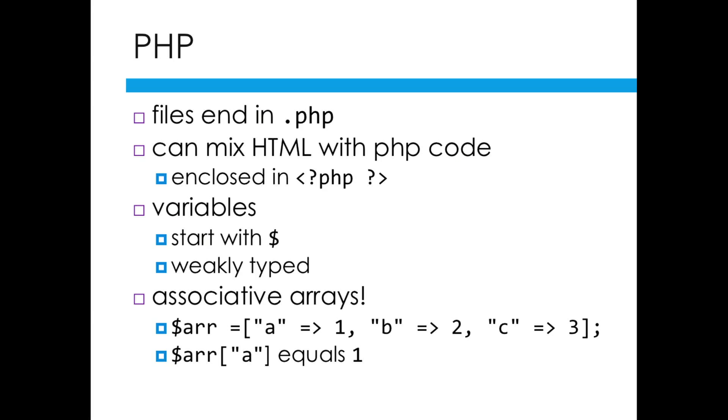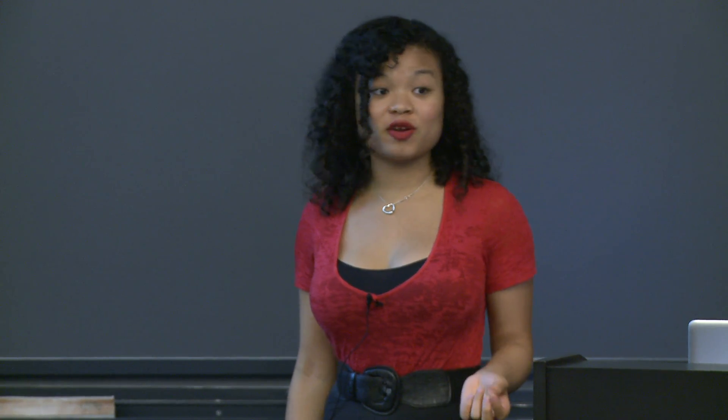Moving into PHP, whenever you want a PHP file, the file suffix is .php. You can also mix HTML with PHP code. If you have an HTML file, then you can enclose PHP code with the left angle bracket question mark PHP, put your PHP code, and then close that with another question mark and a right angle bracket. Variables in PHP are a lot easier to deal with than variables in C. Any variable just starts with a dollar sign in front of it, and they're weakly typed. That means you don't need to worry about setting something equal to a string or an integer.